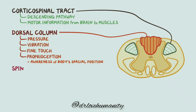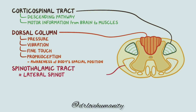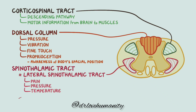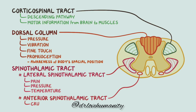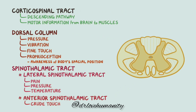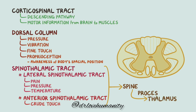Then there's the spinothalamic tract, which is divided into two distinct tracts: the lateral spinothalamic tract, which is responsible for sensing pain, pressure, and temperature, as well as the anterior spinothalamic tract, which senses crude touch. The spinothalamic tract carries all of this sensory information from the spine up to the thalamus of the brain, where the information is processed.